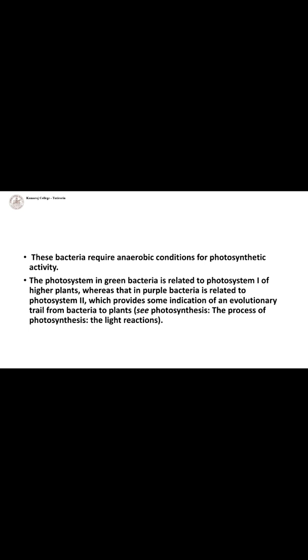Bacterial chlorophyll contains a single type of reaction center, whereas cyanobacteria have two types. Bacterial chlorophyll did not evolve oxygen and uses low-energy, long-wavelength light, requiring electron donors other than water. Examples include green bacteria and purple sulfur bacteria, which use electron donors such as sulfide, thiosulfate, or hydrogen gas. Purple non-sulfur bacteria use electrons from hydrogen or organic substrates under anaerobic conditions.